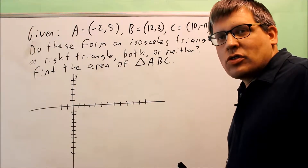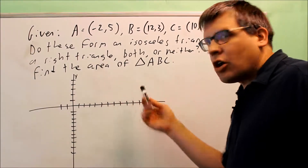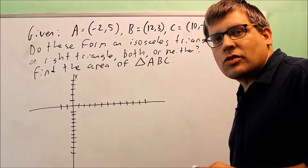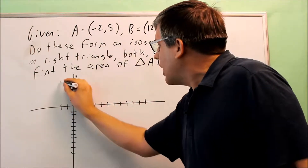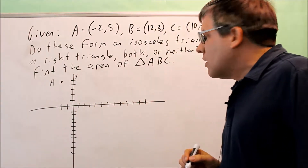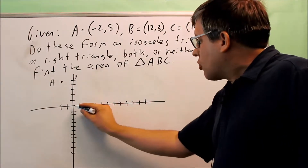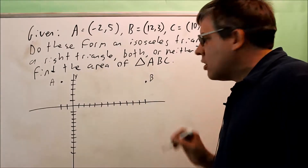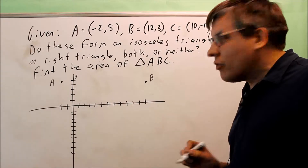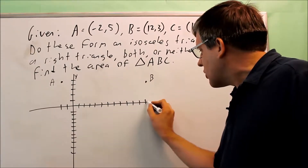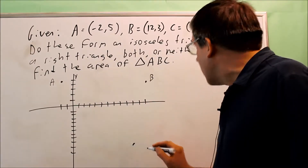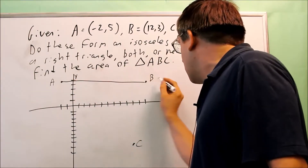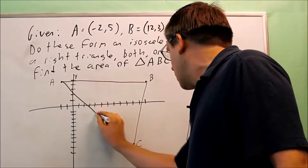It's probably best to plot the points first, that way you have a better idea of what's going on. You can see all three sides of the triangle. So I'm going to start by plotting the points. The first one is (-2, 5) — go two places to the left and up five units — that's point A. Next, point B is at (12, 3), so 12 to the right and up three. Then point C is at (10, -11) — that's two back from 12, and down 11. Now we connect all these with lines, and it does form a triangle.